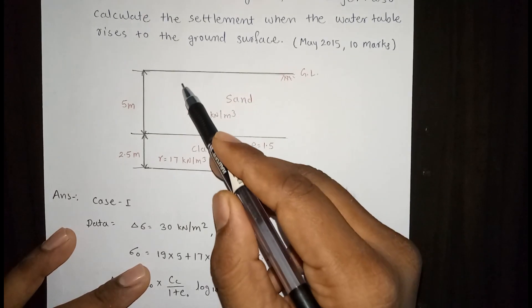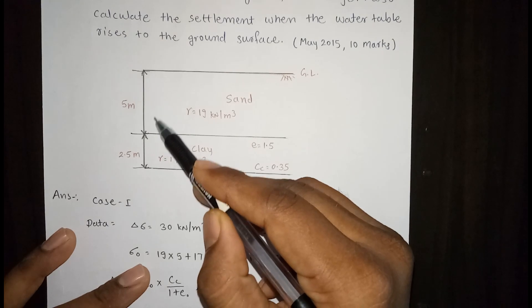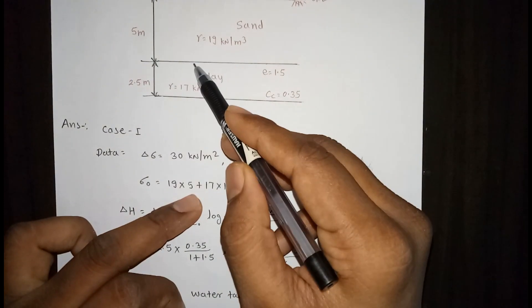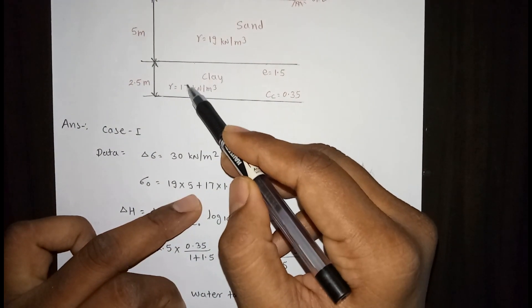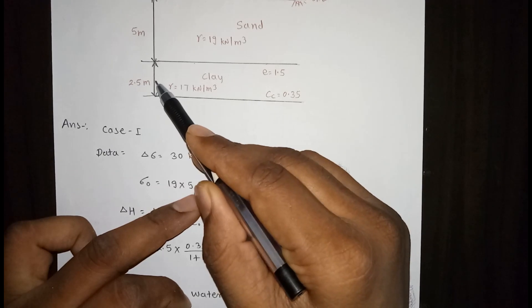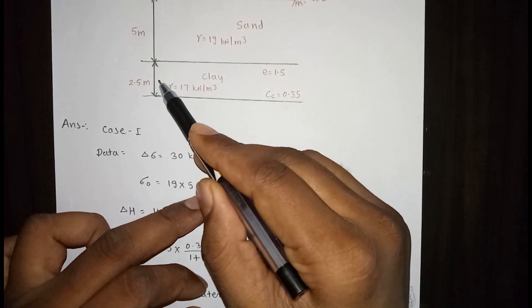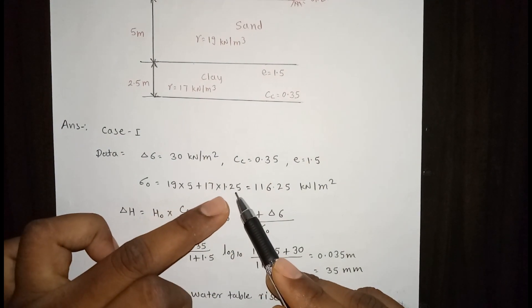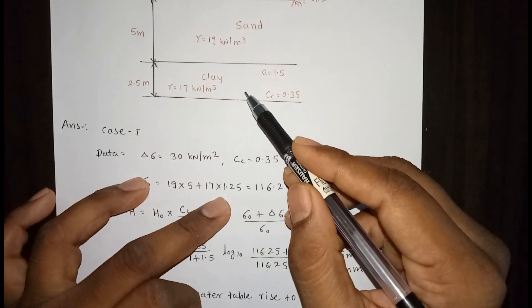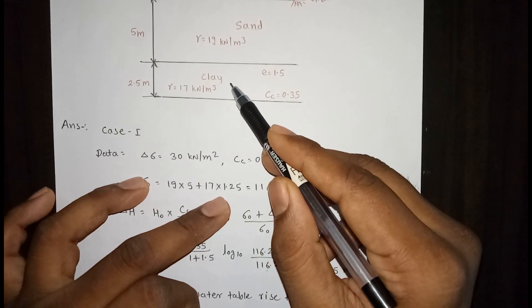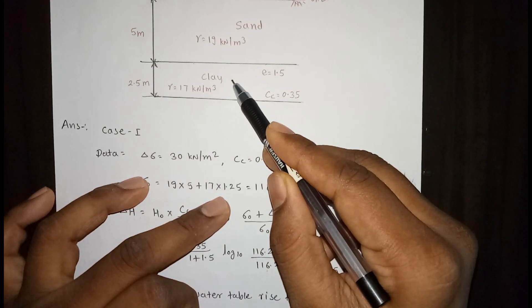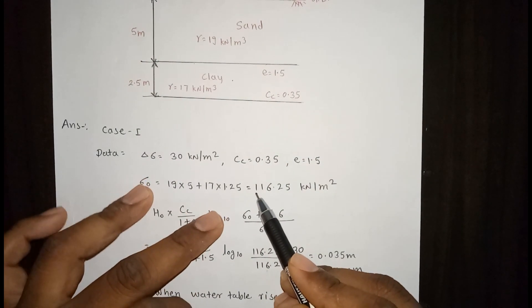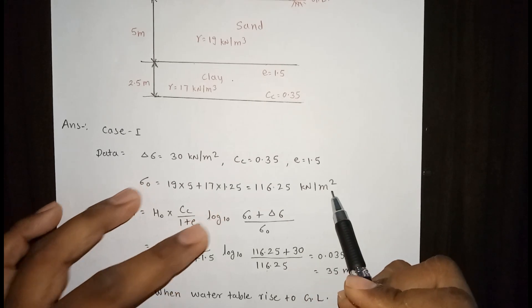In the first layer, z is 5 meters and gamma is 19, so 19 times 5. In the second clay layer, gamma is 17 and the mid of the clay is 2.5 divided by 2, which is 1.25. So 17 times 1.25 because we always calculate the pressure at the center of the clay layer. Sigma 0 is 116.25 kN per meter square.